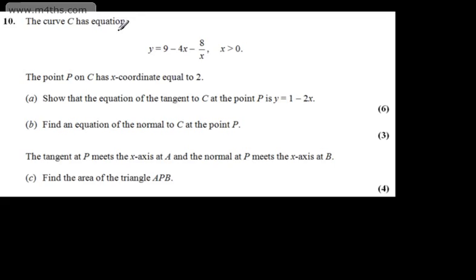This is question number 10. We're told the curve C has equation y equals 9 minus 4x minus 8 over x, where x is greater than 0. The point P on C has x-coordinate equal to 2. In part A, for 6 marks, we need to show that the equation of the tangent to C at the point P is y equals 1 minus 2x.